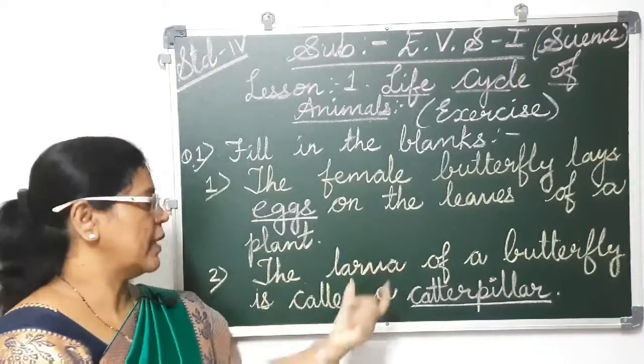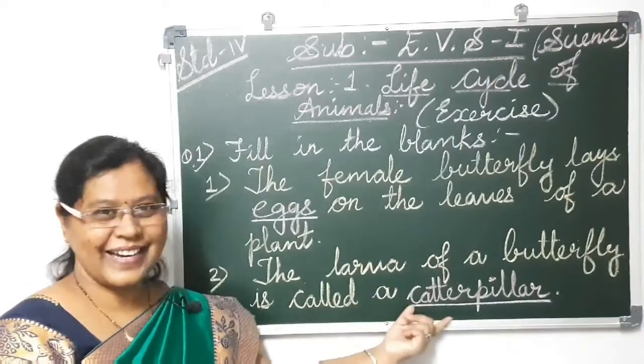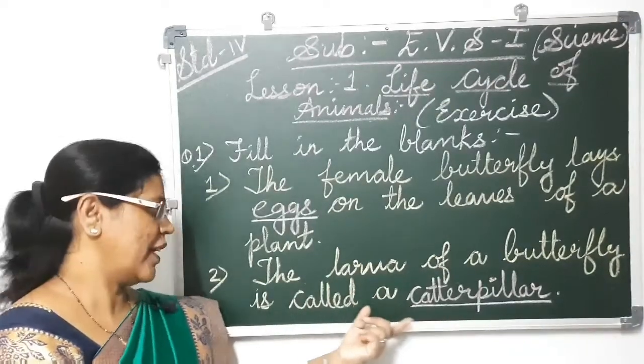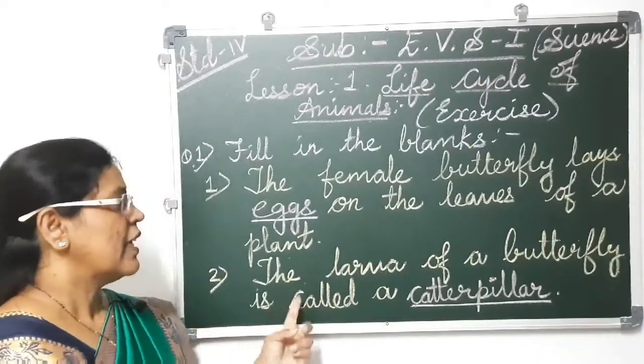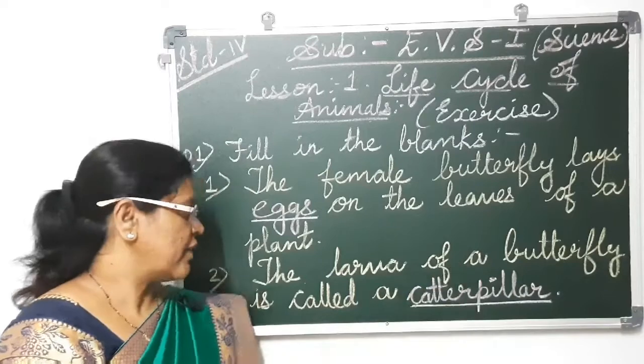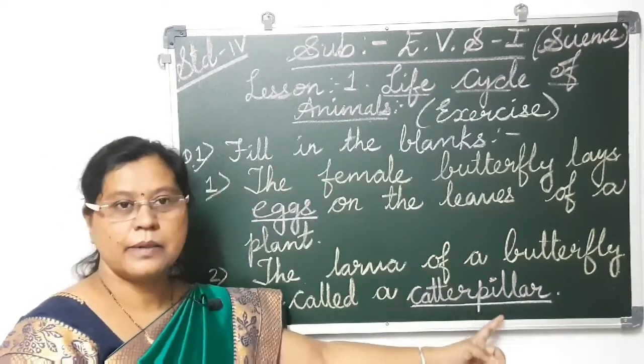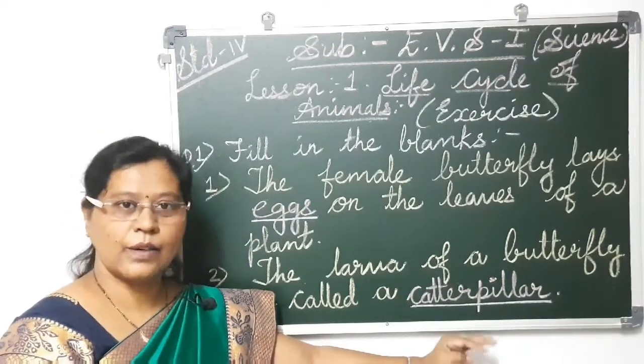Second one: the larva of a butterfly is called a caterpillar. The larva of a butterfly is called a caterpillar.